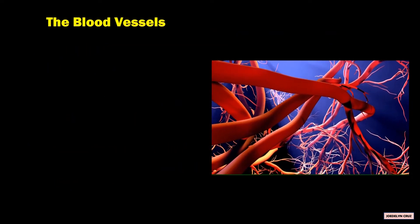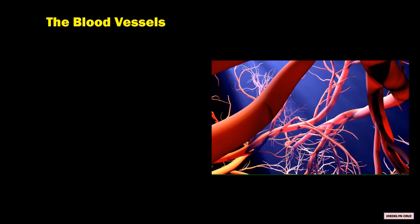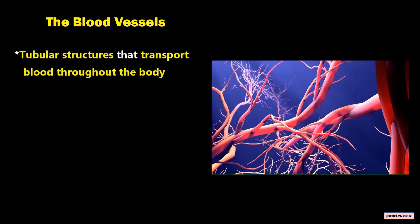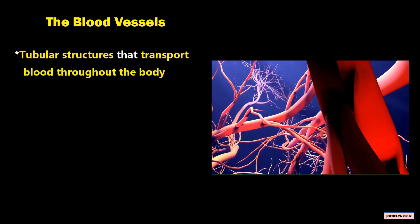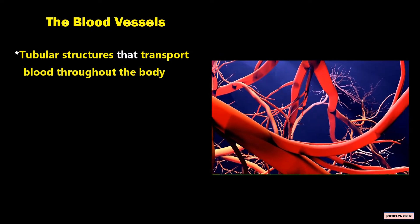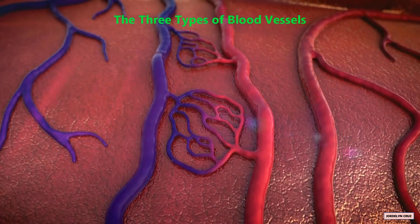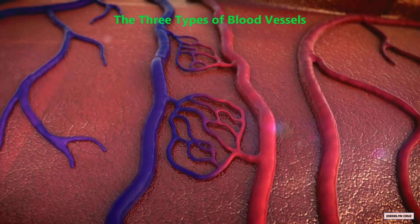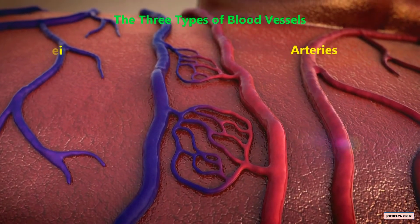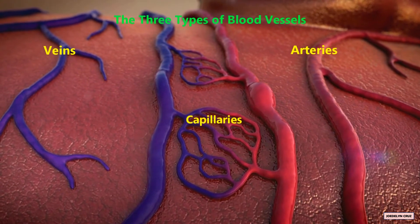The blood vessels are tubular structures that transport blood throughout the body. The three types of blood vessels are arteries, veins, and capillaries.